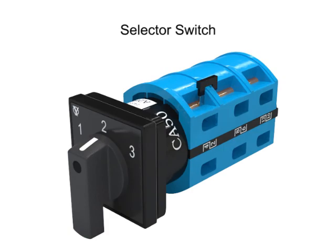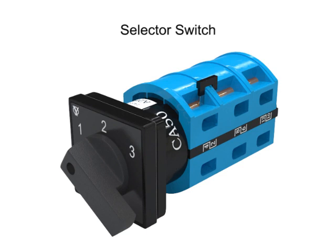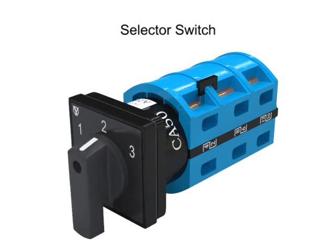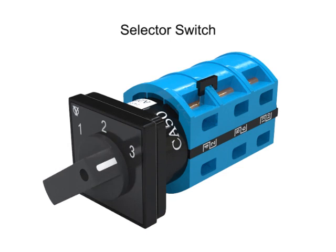A selector switch is a device with an operator that is manually rotated to activate electrical contacts. They are normally used to select either two or three different circuit conditions.